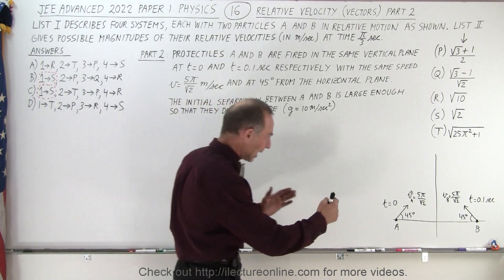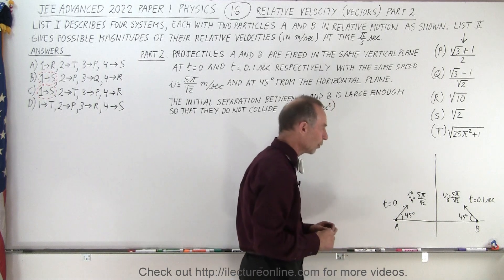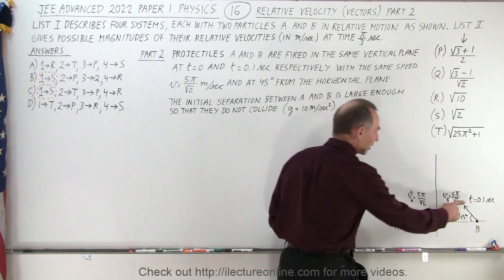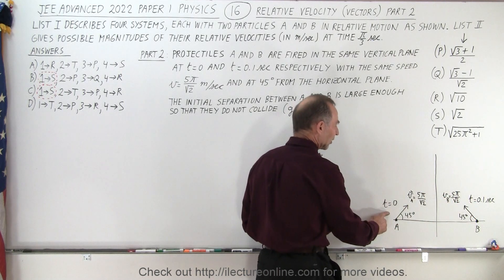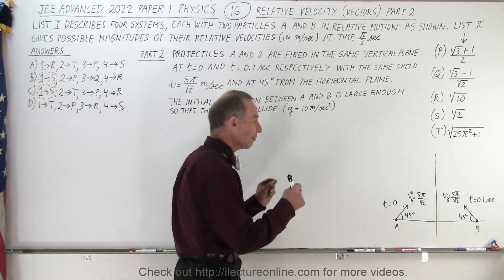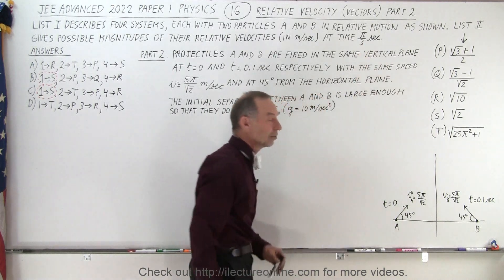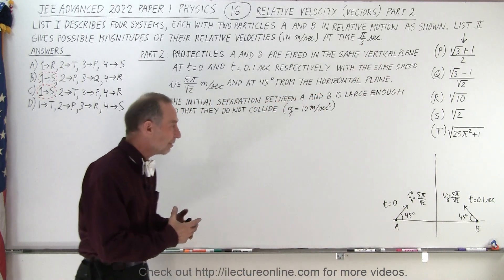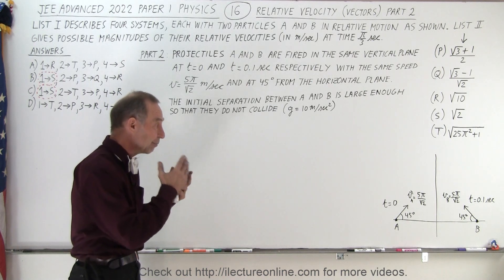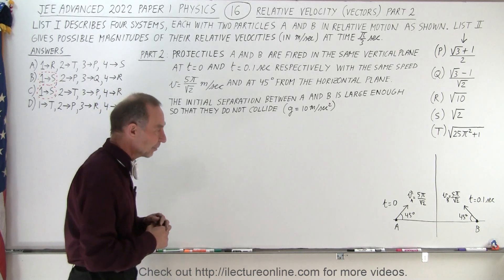They provide a diagram showing the projectiles are being fired towards one another at 45 degrees above the horizontal. They have the same initial speed, but they are not fired at the same time — A is fired at t equals zero and B is fired at t equals 0.1 seconds. We need to find the relative velocity at time π over 3 seconds, meaning we need the vector expression for the velocity of A and the velocity of B separately so we can subtract one from the other and find the magnitude of the difference.